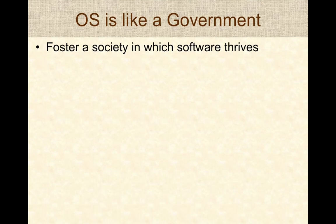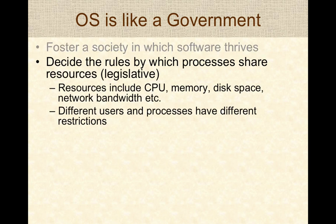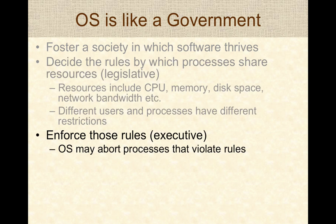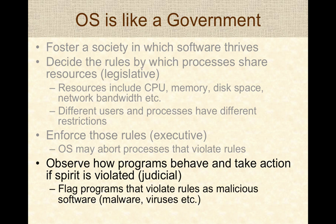You can think of an operating system as a government which fosters a society in which software thrives. The operating system decides the rules by which processes share resources — including CPU time, RAM, disk space, network bandwidth, and so on. You can think of these rules as the legislative branch. The operating system enforces these rules, and if a program or process violates them, the operating system will abort the program — you can think of this as the executive branch.